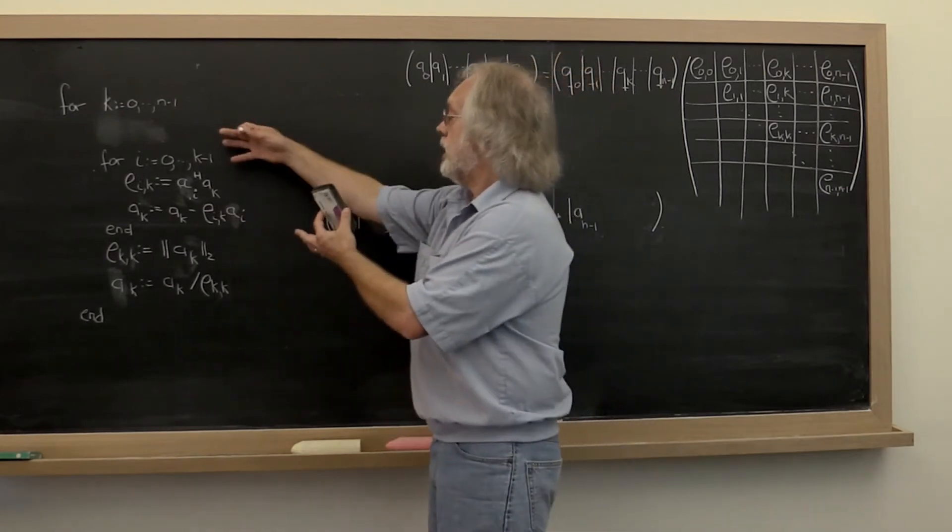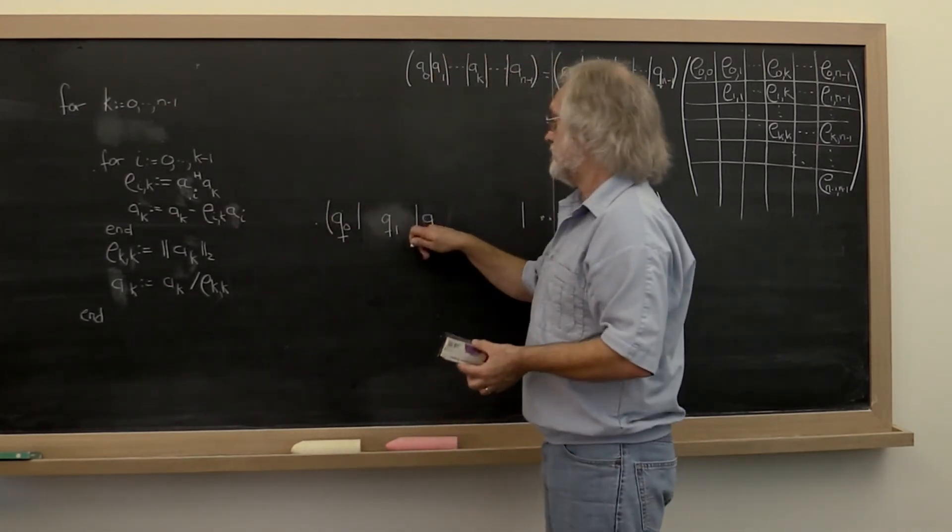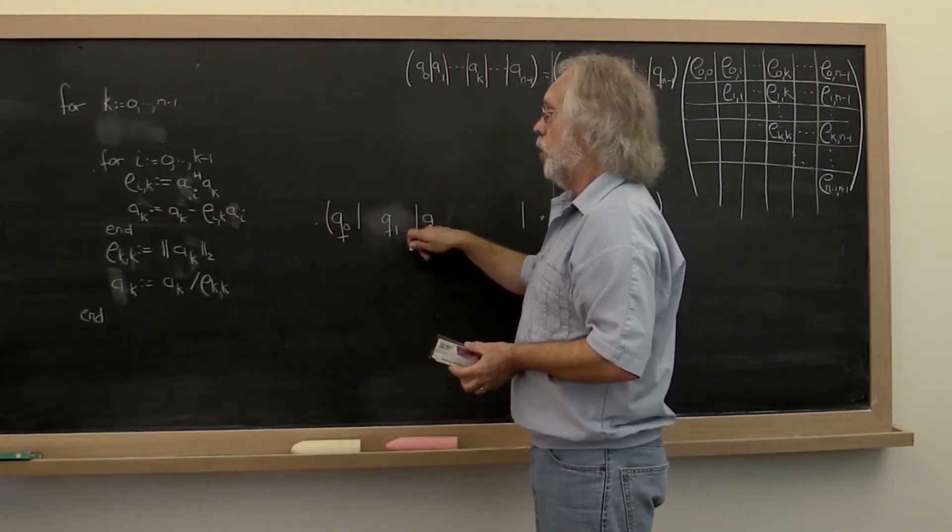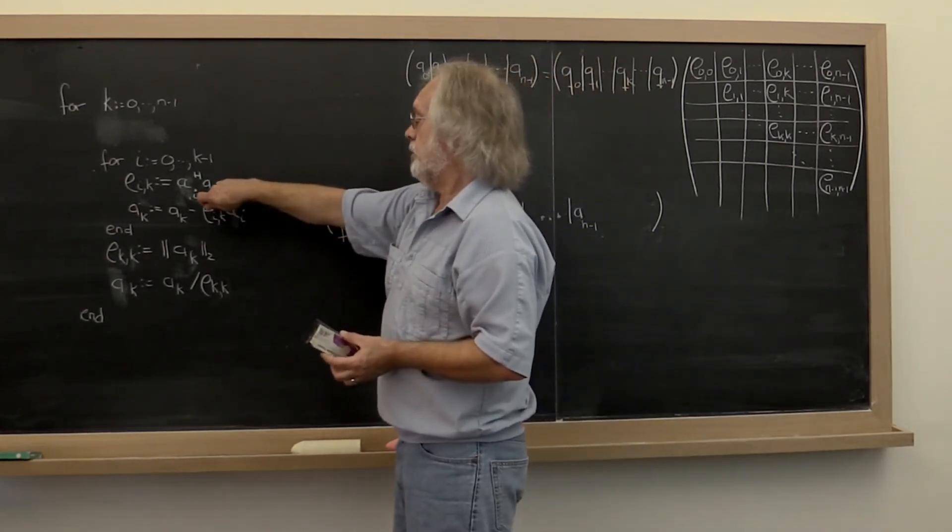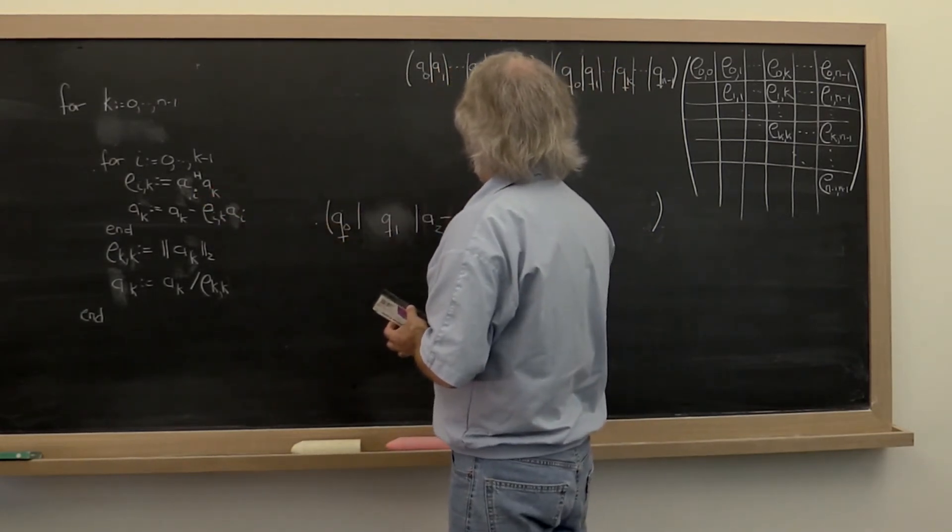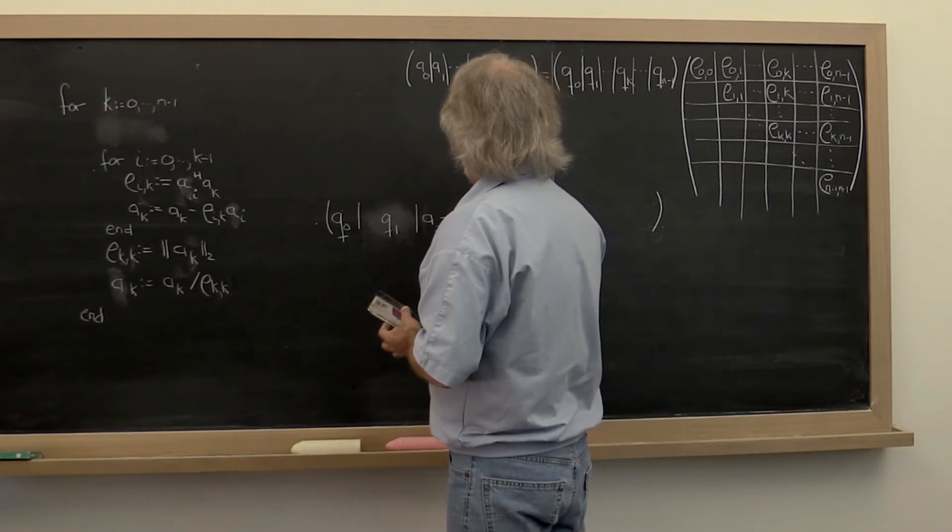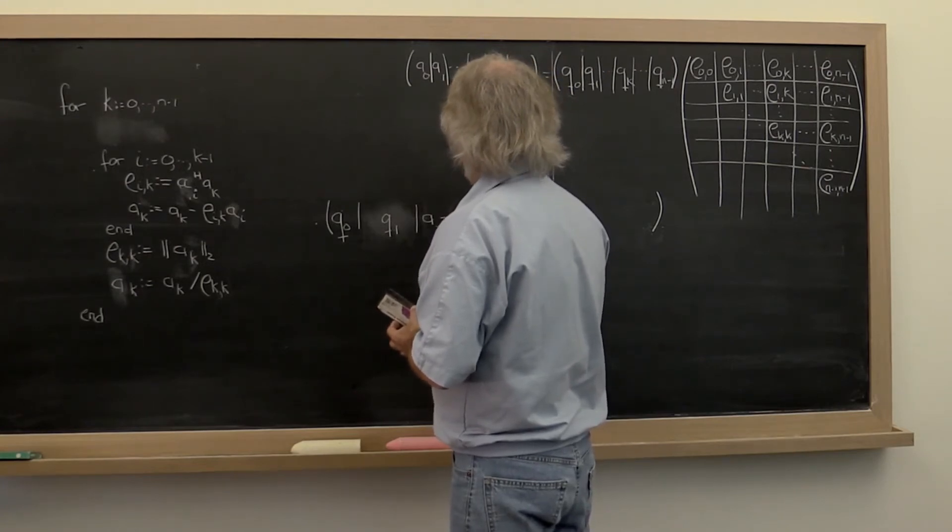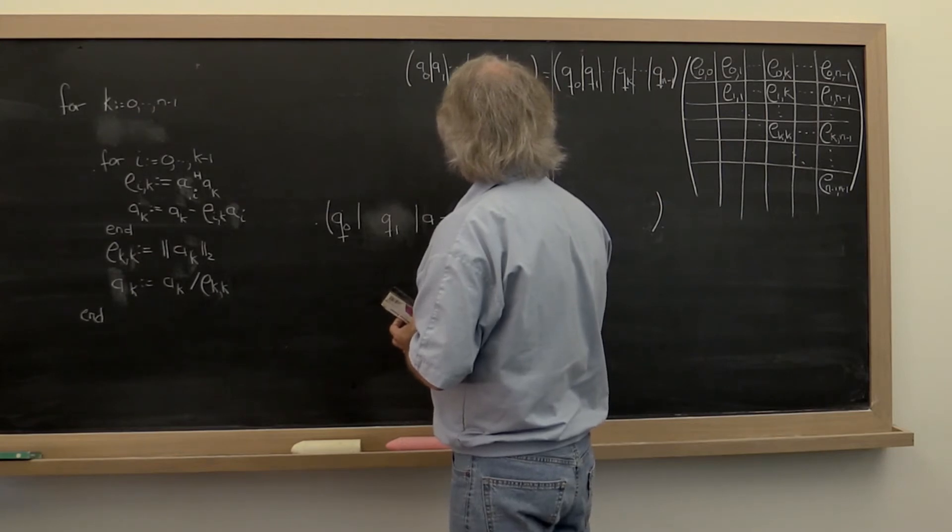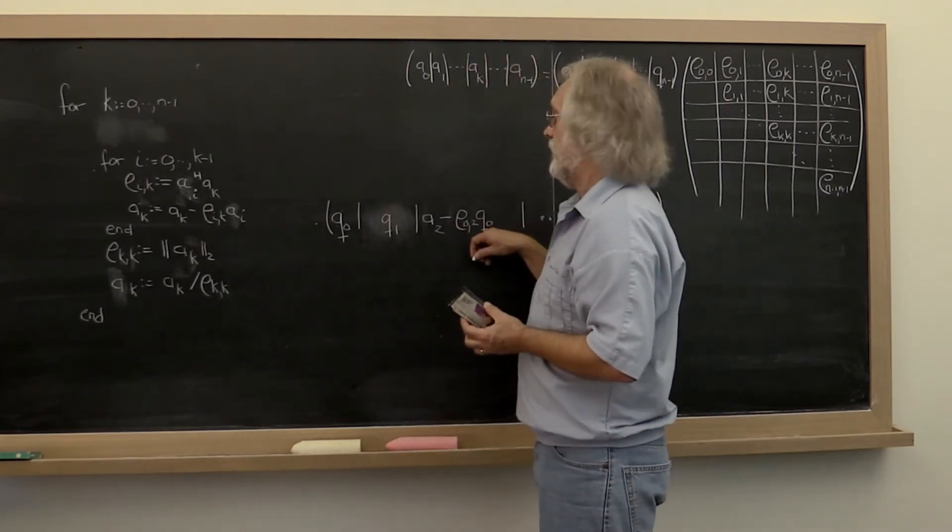Okay, back to the top of the loop. Now we look at the next column of A. What do we do? In the first iteration of this we subtract off, we compute rho_02 and we then use that to subtract off the component in the direction of q_0.